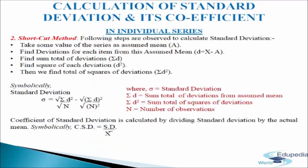Now we come to the calculation of standard deviation and its coefficient in individual series using the shortcut method. The steps are: first, take some value of the series as assumed mean a; then find deviation for each item from this assumed mean: d = x − a; then find the sum total of deviations σd; find the square of each deviation d²; and find the sum total of squares of deviation σd². The formula is: SD = √(σd²/n − (σd/n)²), where σd is the sum total of deviations from assumed mean, σd² is the sum total of squares of deviations, and n is the number of observations.